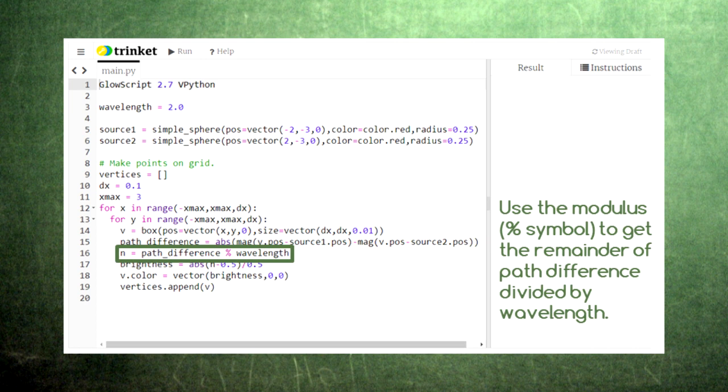If this remainder is close to zero or one, then we have constructive interference. If this remainder is close to one half, then we have destructive interference.